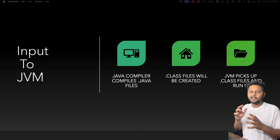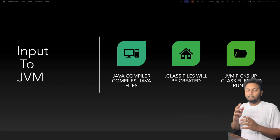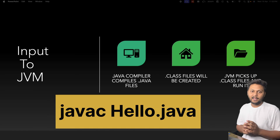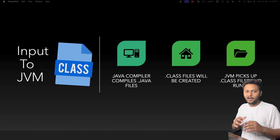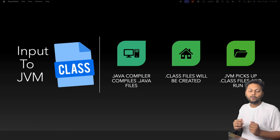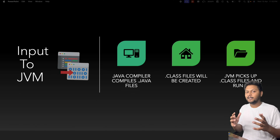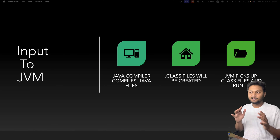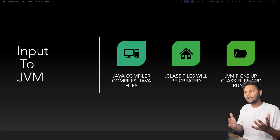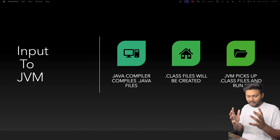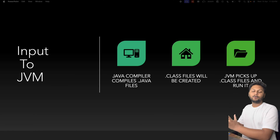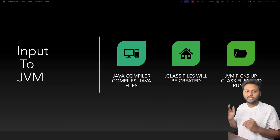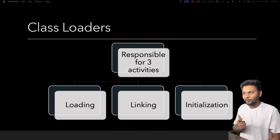Whenever we write Java code inside a Java file and compile it using the 'javac' command — for example, 'javac Hello.java' — a class file will be generated by the Java compiler. The compiler compiles .java files and creates a .class file, and that .class file is the input to JVM. JVM will pick up the .class file and start executing it.